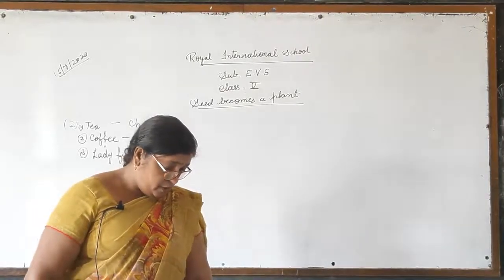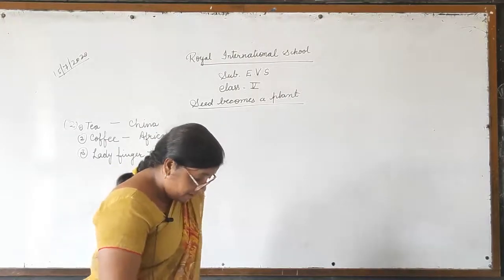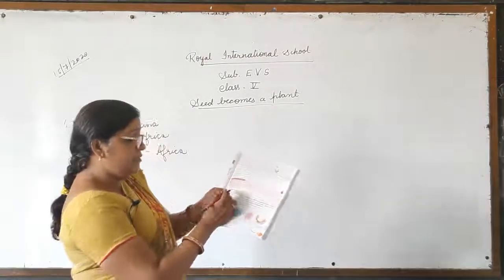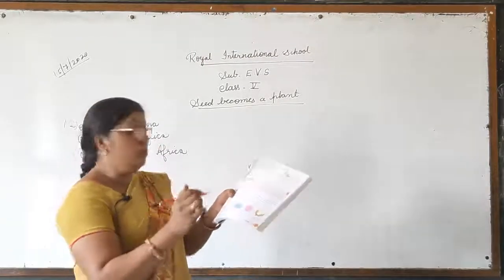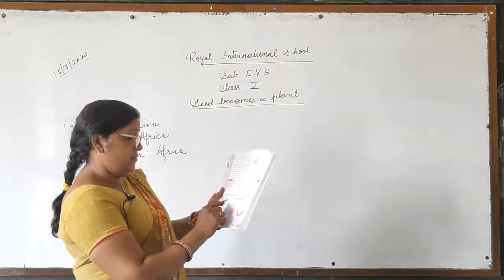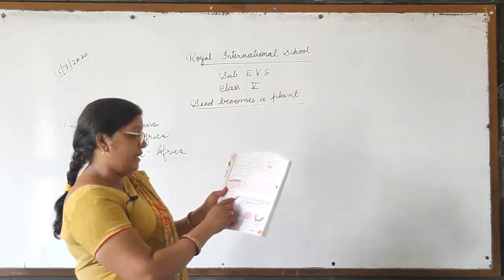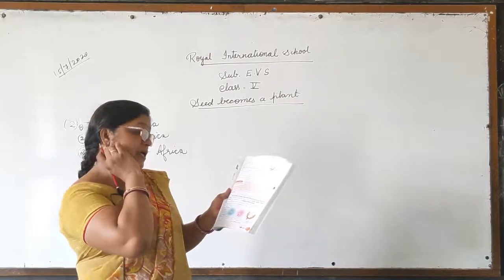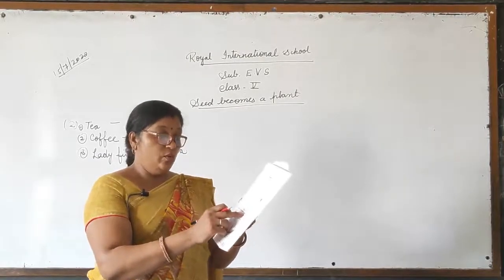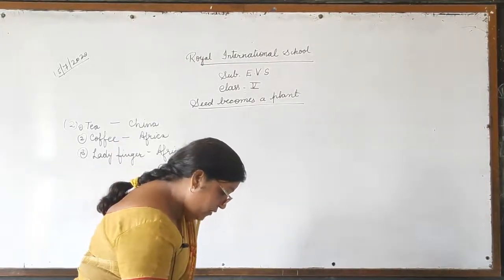Third question: what is meant by dispersal of seeds? For the answer, go to page number 57. Here you can see 'dispersal of seeds' written. The scattering of seeds away from the parent plant is called dispersal of seeds. This is your third answer — scattering of seeds away from the parent plant; when seeds move away from parent plants, we call it dispersal of seeds.